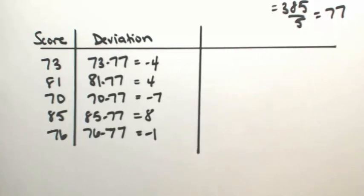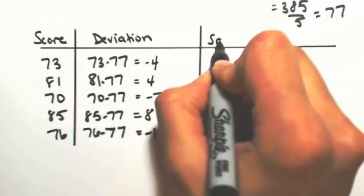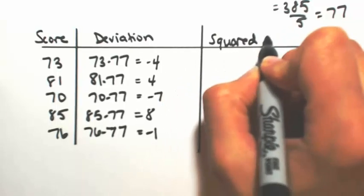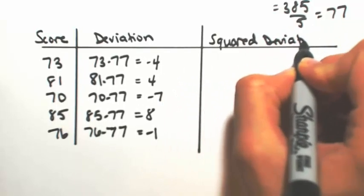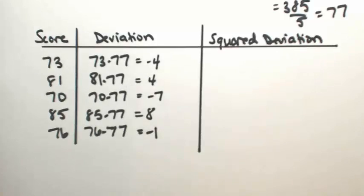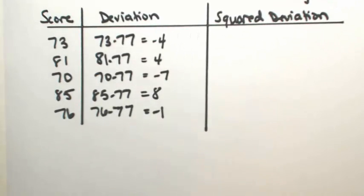So the next thing we're going to do to find the standard deviation is we want to get positive parts of the deviation. So what we're going to do is square. So we're going to do the squared deviation.